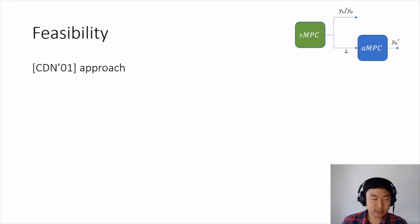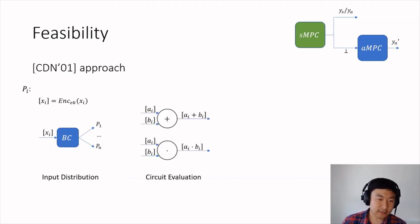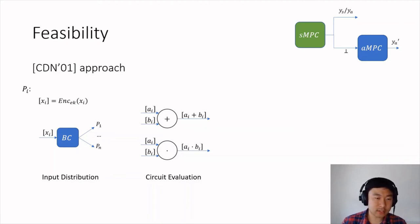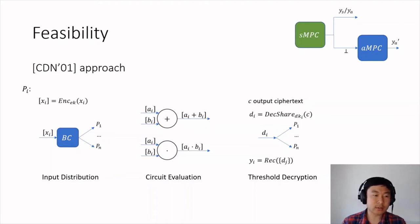The sub-protocol SMPC follows the CDN approach — the Cramer, Damgård, Nielsen approach — based on threshold homomorphic encryption. The CDN protocol has three phases. In the first phase, each party Pi encrypts its input with the threshold encryption key and broadcasts the ciphertexts. The parties then jointly evaluate the circuit — addition gates using the homomorphic property, and multiplication gates using a distributed protocol. After the circuit evaluation, each party holds an encryption of the output, computes a decryption share, distributes it, and then parties jointly reconstruct the output. To achieve security against a malicious adversary, parties need to use zero-knowledge proofs in several steps.